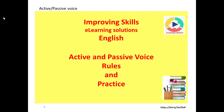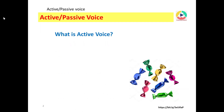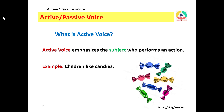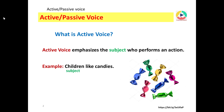Bismillahirrahmanirrahim, Assalamu Alaikum. Welcome to Improving Skills E-Learning Solutions. This English lesson is about active and passive voice — we will discuss its rules and do some practice. Active voice emphasizes the subject who performs an action. Example: children like candies. Children is the subject, like is the verb, and candies is the object.